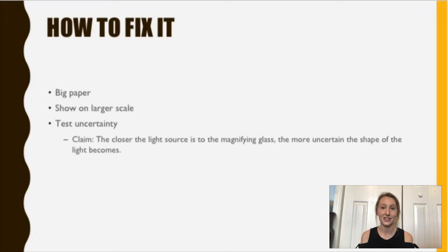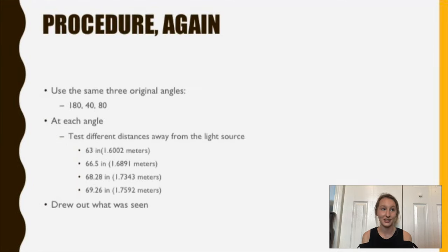So how to fix it, I thought maybe using larger paper and then show it on a larger scale. And this would then test the uncertainty and do the claim that the closer the light source to the magnifying glass, the more uncertain the shape of the light becomes. So my procedure, once again, I would use the same three original angles. So 180 degrees, 40 degrees, and 80 degrees.